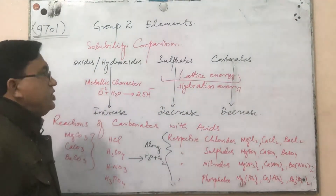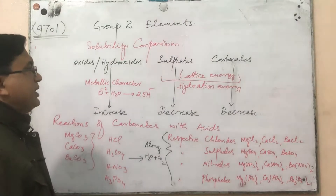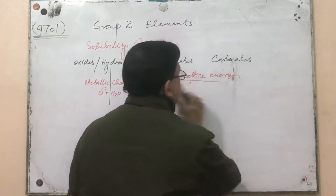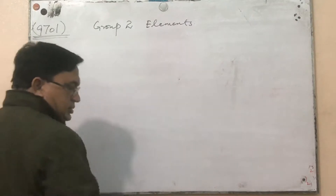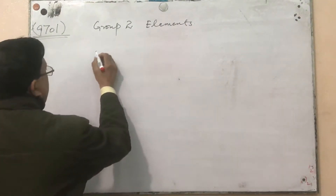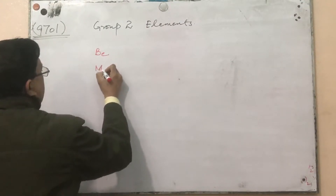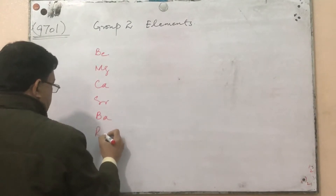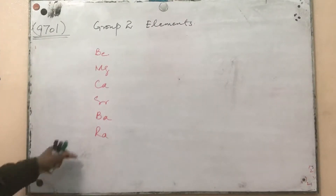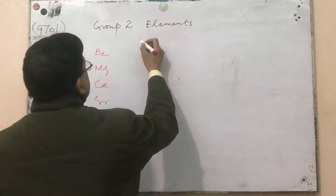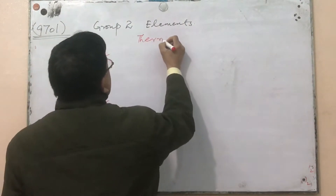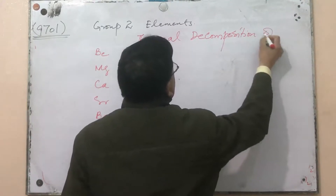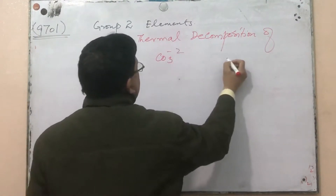Next is the thermal decomposition of carbonates and nitrates of Group 2. The elements of Group 2 are beryllium, magnesium, calcium, strontium, barium, and radium. Radium is a radioactive element, so its compounds are not discussed. Now we are going to discuss thermal decomposition of carbonates and nitrates.